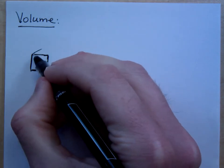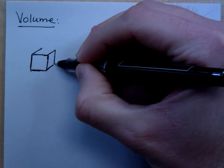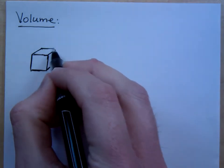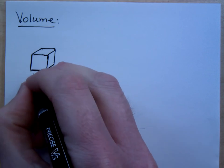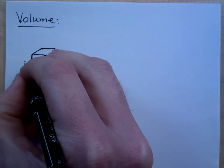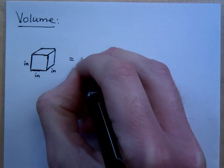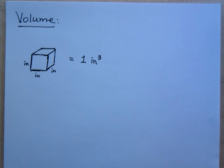When we talk about volume, though, that's when we talk about how many cubes will fit into a figure. Suppose this is an inch. So this guy would be one cubic inch. This is how we measure volume, is in cubic units.